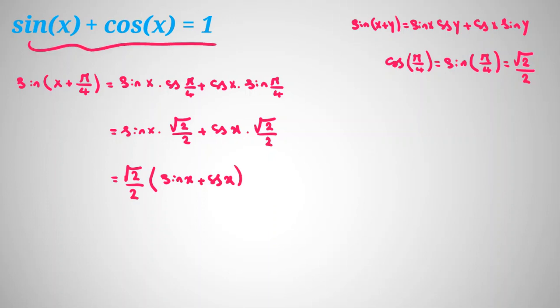By assumption of the problem, we know sin x plus cos x is 1. So it will be root 2 over 2. So we've concluded that sin of x plus pi over 4 equals root 2 over 2, and root 2 over 2 is sin pi over 4.